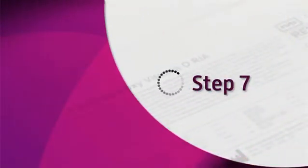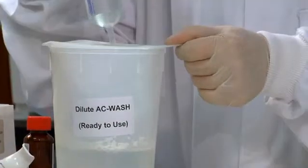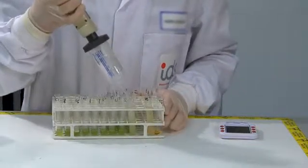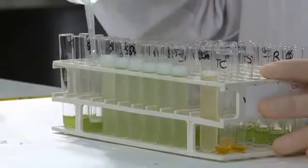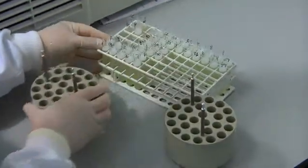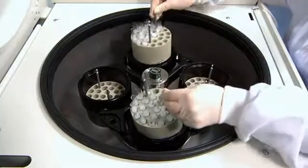Step 7: Add 4 ml of wash solution to all tubes except for total count tubes. Centrifuge all tubes except for total count tubes at 2000G for 20 minutes.